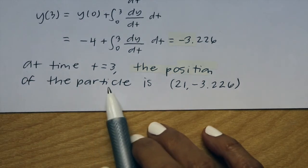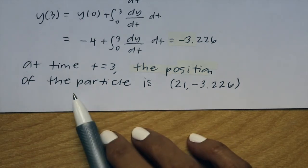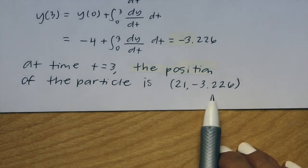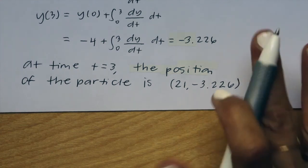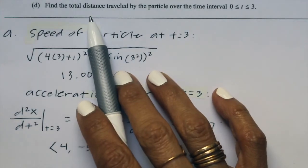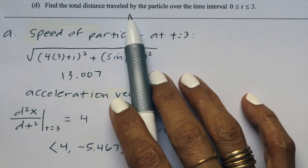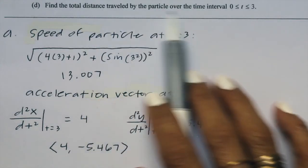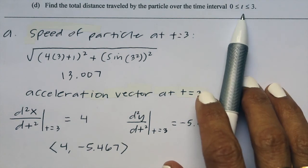So at time t equals 3, the position of the particle is (21, −3.226).